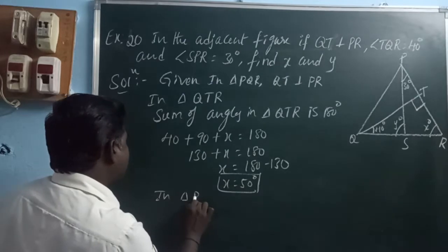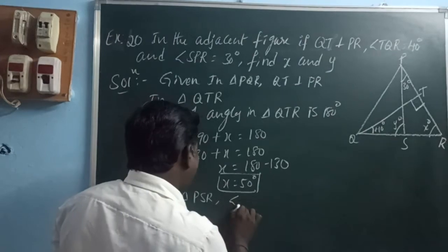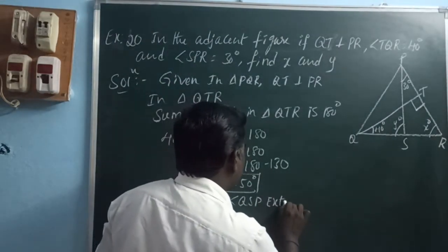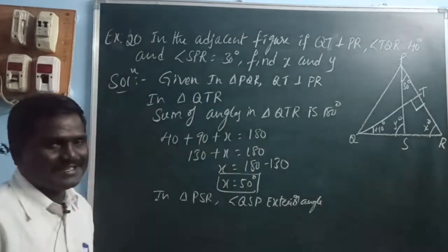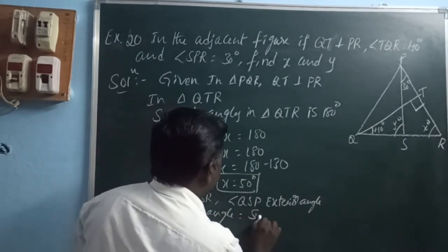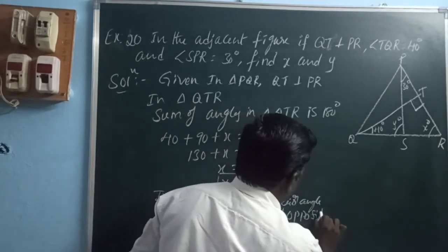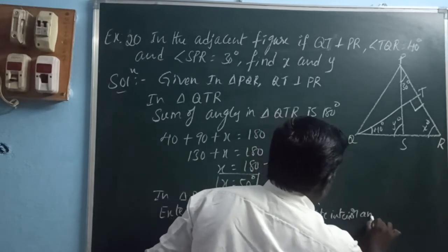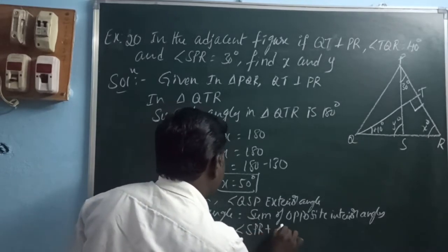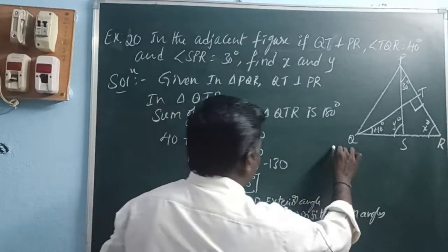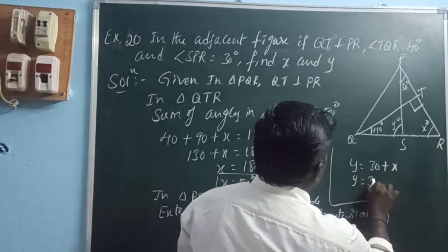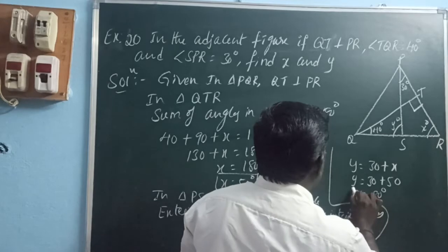To find Y, in triangle PSR, angle QSP is an exterior angle. Using the exterior angle property: angle QSP equals angle SPR plus angle PRS. So Y equals 30 plus X, where X is 50. Therefore Y equals 30 plus 50, which is 80. The Y value is 80.